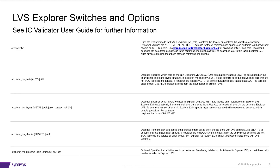The options shown here are LVS Explorer switches which can be found in the IC Validator User Guide. It is worth noting that there are several different options for the LVS Explorer, such as which cells are analyzed during the run, if you only want to analyze certain metals versus all metals in your design, whether you just wish to check shorts or all types of text-based short checking, or if there are cells you wish to preserve and not have ICV perform hierarchy-related operations on.